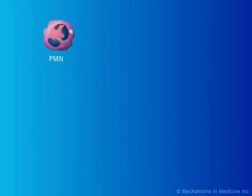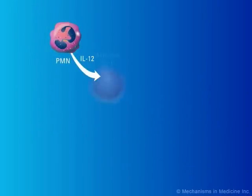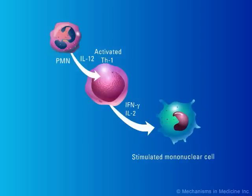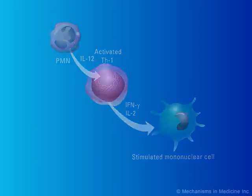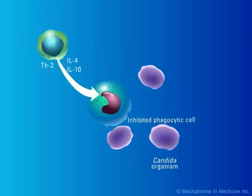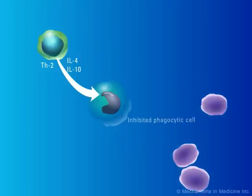Here a leukocyte is producing interleukin-12, activating a Th1 cell which plays a key role in preventing the development of mucocutaneous candidiasis. The Th1 cell secretes interferon gamma and interleukin-2 that enhance the activity of mononuclear cells to engulf Candida cells. On the other hand, the Th2 lymphocyte inhibits phagocytosis through the production of interleukin-4 and interleukin-10. This allows Candida organisms to gain a foothold and produce mucocutaneous candidiasis.